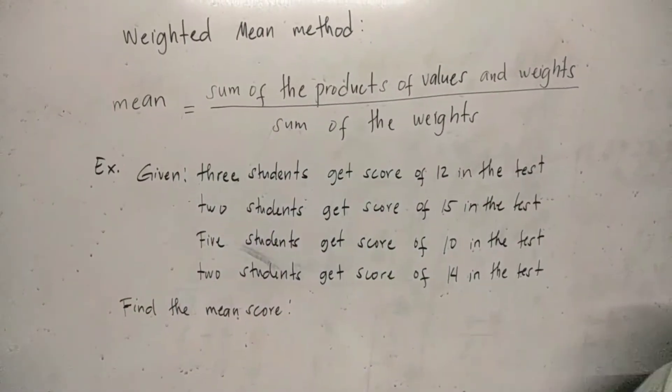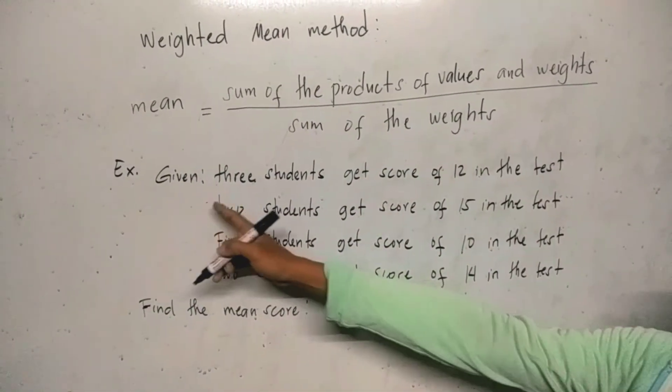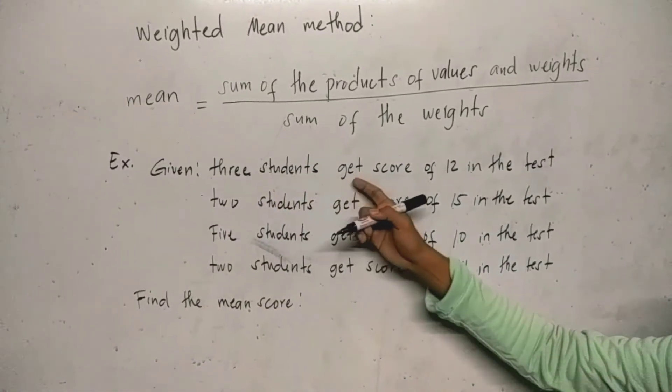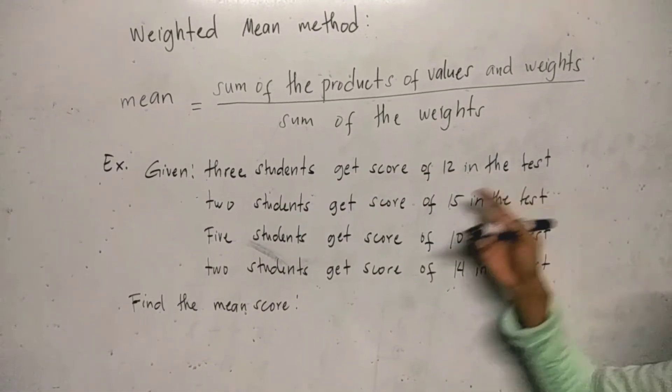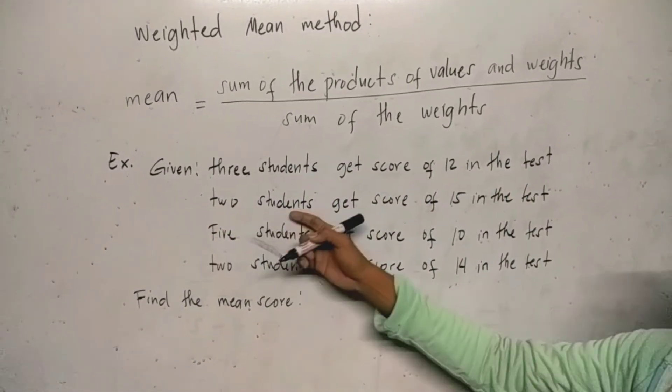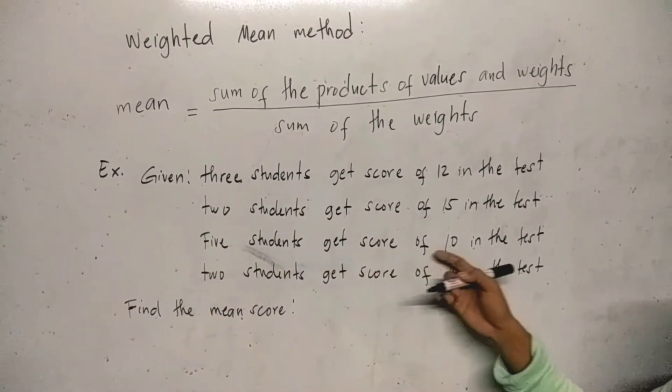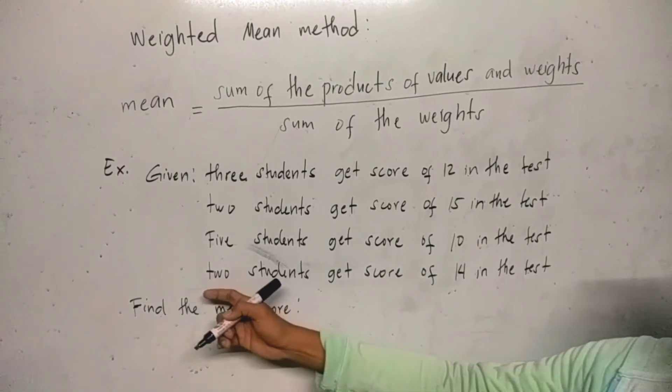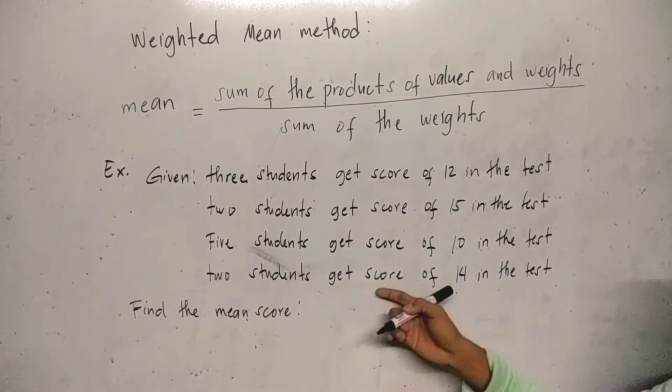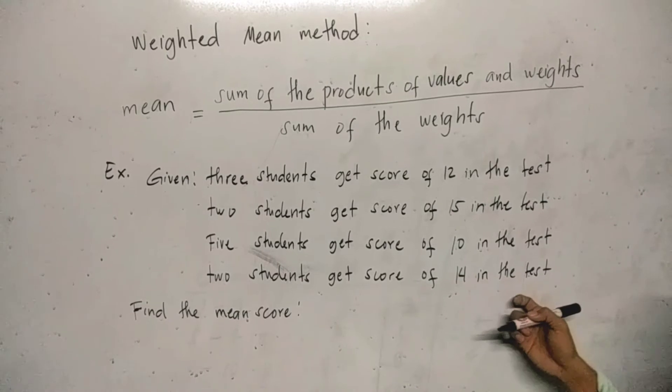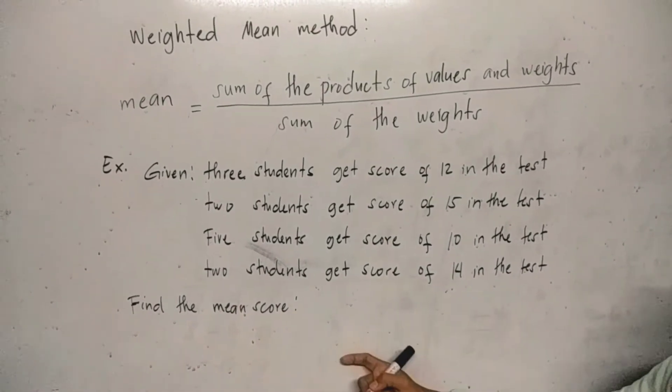Let's have an example. Given we have 3 students get score of 12 in the test and 2 students get score of 15 in the test, then another 5 students get score of 10 in the test, then another 2 students get score of 14 in the test. Find the mean score.